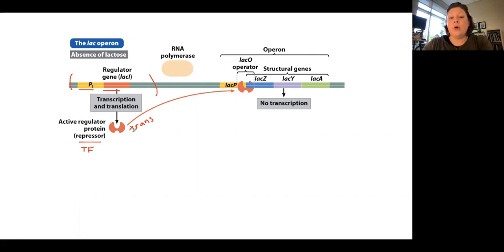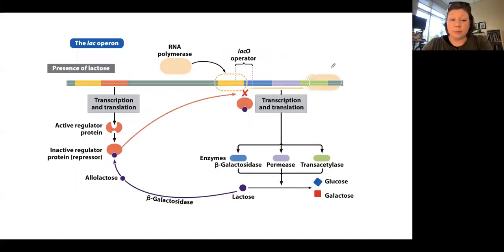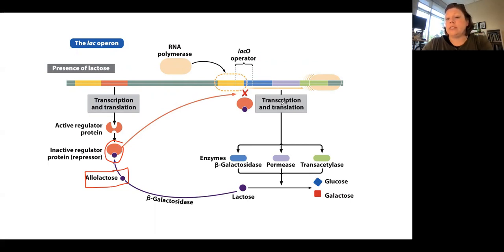This is a repressor protein. When the repressor binds to the operator region near the promoter of the lac operon, it prevents RNA polymerase from being able to get in and transcribe. When lactose is present, this regulatory protein is still produced, but its structure changes when it binds the lactose disaccharide. This changes the structure of the protein so it's no longer able to bind to DNA. Now RNA polymerase is able to do its job, and we see transcription and translation of all three genes: beta-galactosidase, permease, and transacetylase.